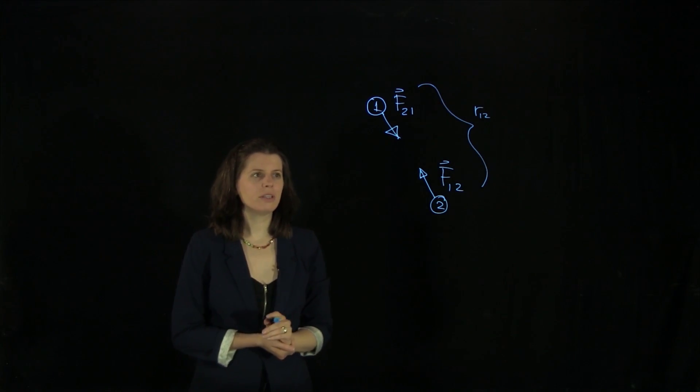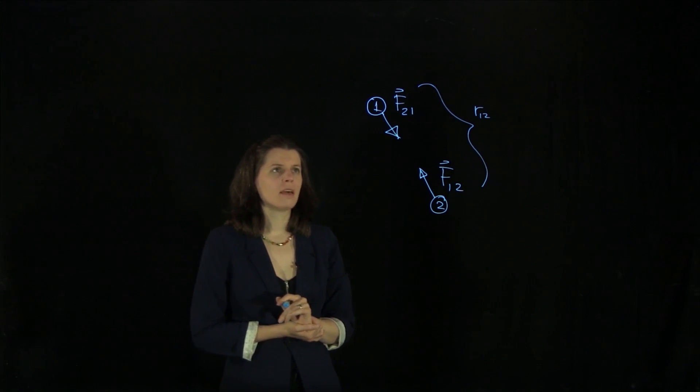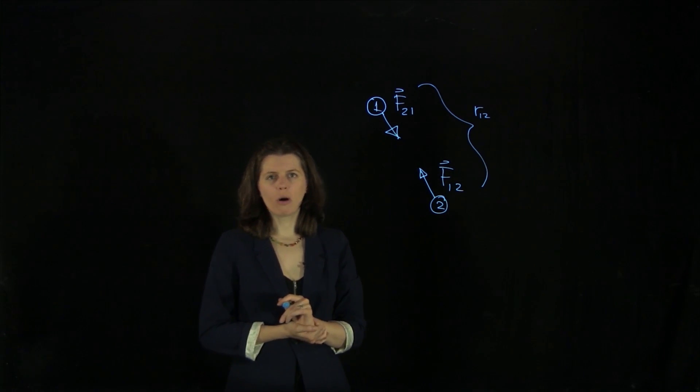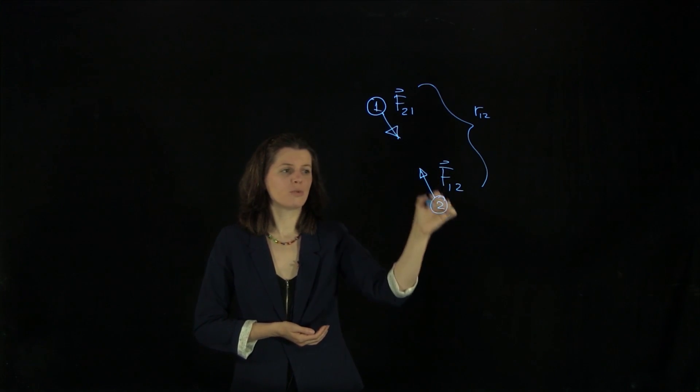Now we want to derive the universal law of gravitation. How are we going to go about that? Well, Newton figured out a while ago that it is proportional to the masses of objects one and two.